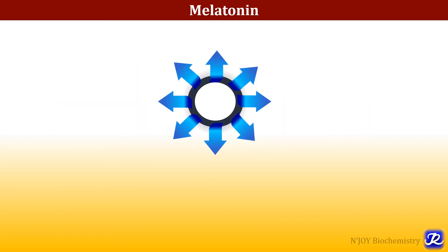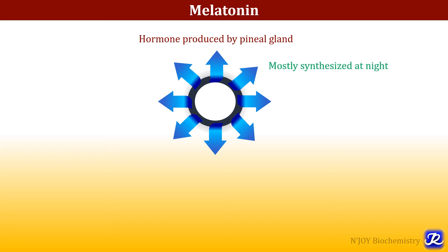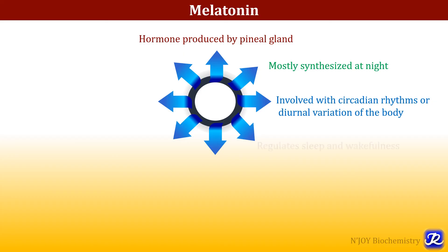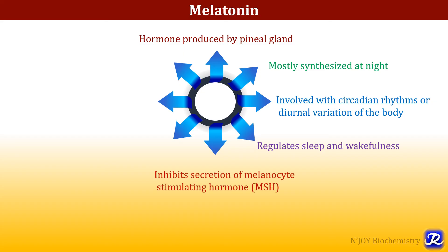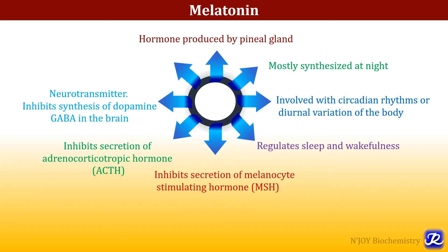What are the various functions of melatonin? Melatonin is a hormone produced by the pineal gland. It is produced from tryptophan through serotonin and is mostly synthesized at night. It is involved with circadian rhythms or diurnal variations of the body and regulates sleep and wakefulness. It inhibits secretion of melanocyte stimulating hormone (MSH) and adrenocorticotropic hormone (ACTH). It also acts as a neurotransmitter by inhibiting synthesis of dopamine and GABA in the brain, and it has an inhibitory effect on the functions of ovaries.